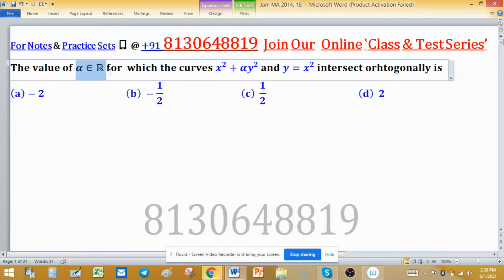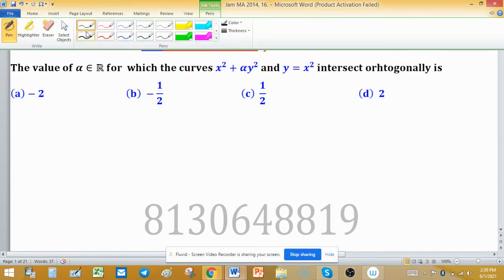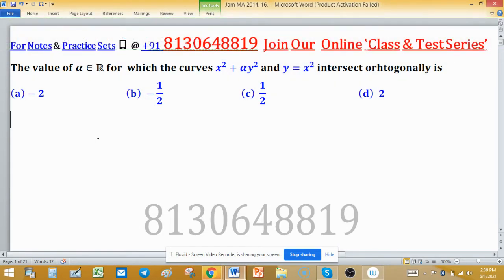The value of alpha, which is a real number, for which the curve x² + αy² and a second curve y = x² intersect orthogonally. This problem can be solved by orthogonal trajectory, which normally comes in differential equations.